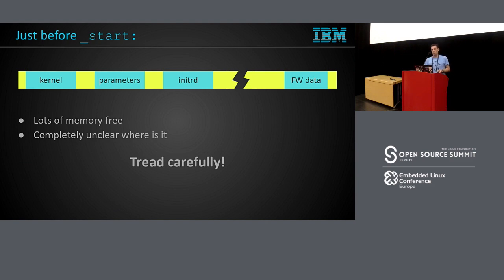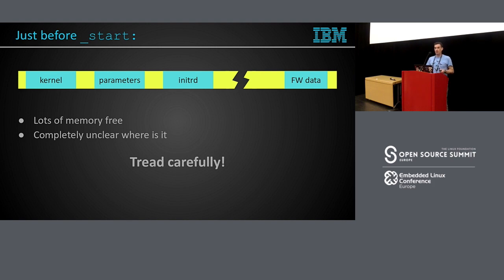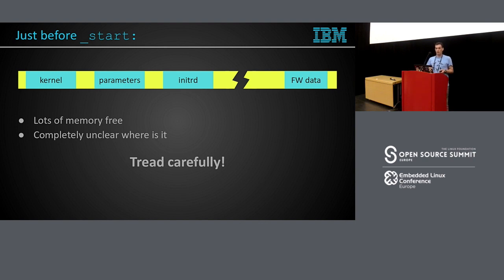When the bootloader jumps into the Linux kernel, this is more or less the view of physical memory. There are several used regions: the kernel code and data, the parameters the bootloader passes to Linux (which can be command line, some data structure, or device tree — it depends on the architecture), an optional initrd image used as the very first initial user-space filesystem, and sometimes firmware data that lives during kernel execution. This is also architecture dependent. Most of the memory, as we can see, is free — but the kernel still doesn't know where it is.